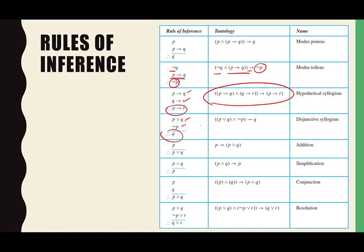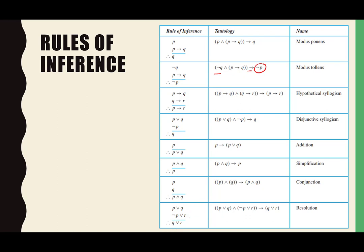Good question: if things are stacked like this — something here, something here, then a line, then something — this is always an 'and.' I'm claiming that this is true and that this is also true, and if both are true, then this must also be true.